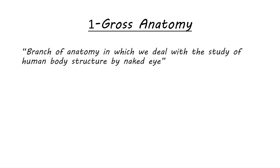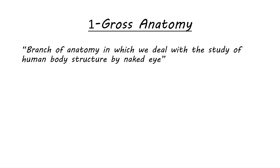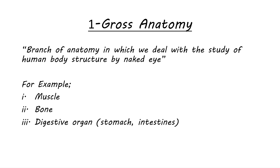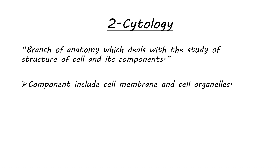In gross anatomy, we study body parts that we can see. For example, we have bones, digestive organs, stomach, and intestines — these are the organs we can see and study; this is gross anatomy. Cytology is the branch of anatomy in which we study at the cell level — cell components and organelles.